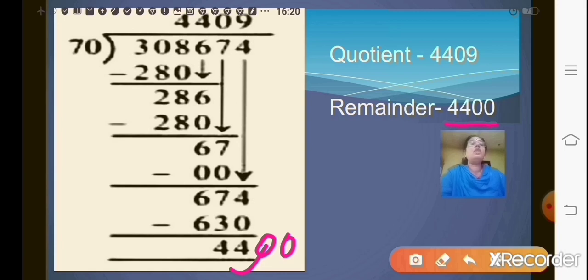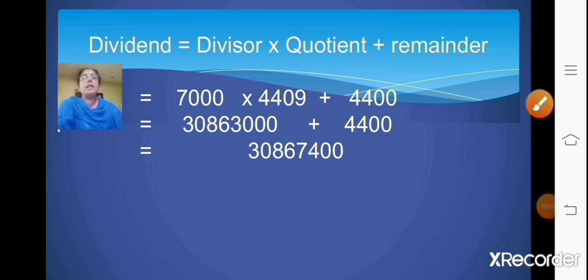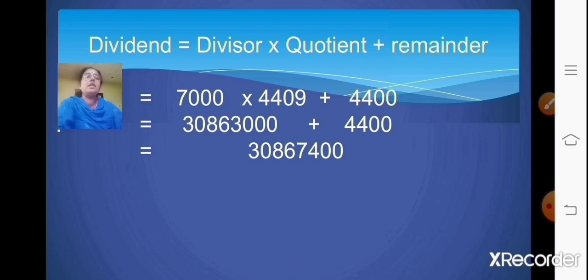By cancelling the common zeros from the dividend and the divisor and then carrying out your division. Coming to the checking part: dividend equals divisor into quotient plus remainder. Our divisor was 7000, into quotient 4409, plus remainder — after adding the zeros it is 4400. After multiplying divisor and quotient and adding the remainder, we will get the answer as our dividend. When we get the answer as our dividend, that means the division sum you carried out is correct.